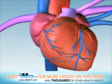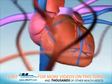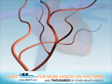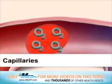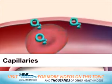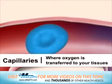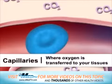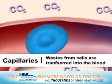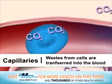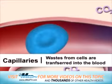As arteries get farther away from the heart, they begin to branch and become smaller and smaller. The smallest branches are called capillaries, and this is where the oxygen in your blood is transferred to your tissues. In exchange, the wastes from your cells, including carbon dioxide, are transferred into the blood.